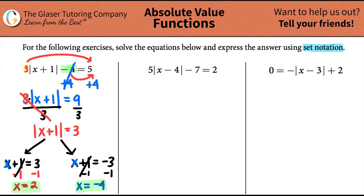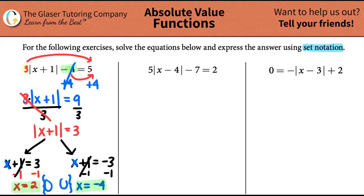We got our two answers. For this problem, it says we have to use set notation. Set notation uses squiggly brackets. All you do is put your two answers inside the squiggles. The standard notation is to put your answers in increasing order, so start with the lower number on the left and the higher number on the right. Between two and negative four, negative four is less than two. So the answer is: negative four, comma, two — and that's the answer for the first one.